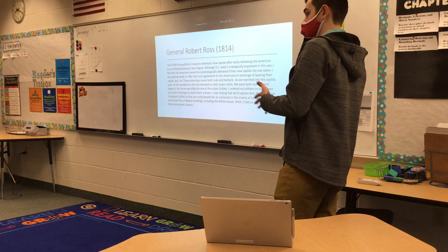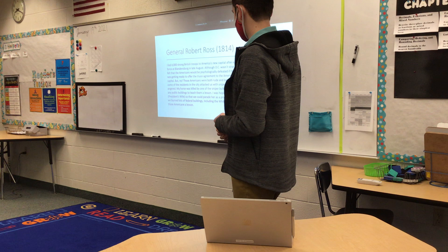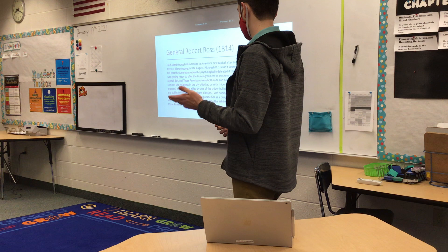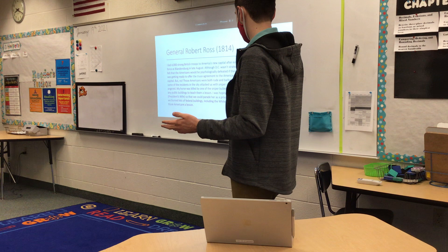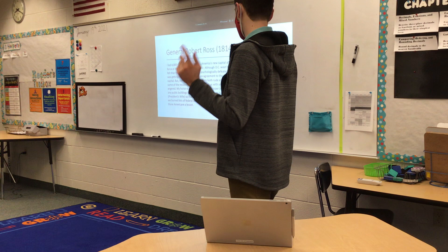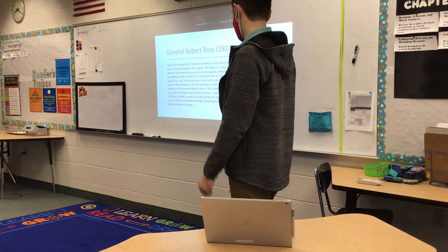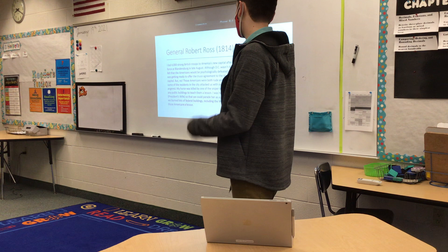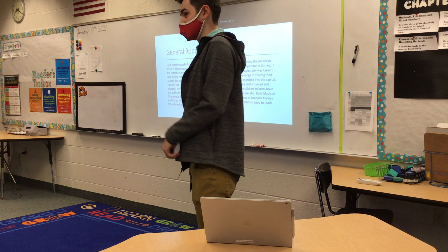Henry Clay continues: our repeated protests achieved no changes. It was time to fight for our maritime rights. I suggested Americans take Canada — British possession to our north — to teach the British a lesson. General Robert Ross, a British Army leader, responds: I led 4,000 British troops to America's new capital after defeating the American force at Bladensburg. Although D.C. wasn't strategically important, I felt the Americans would be psychologically defeated if their capital was taken. But those Americans were rude and barbaric — snipers shot at us as we marched in, killing my horse. I ordered soldiers to burn public buildings and hoped to capture Dolly Madison to parade her as a prisoner in London.